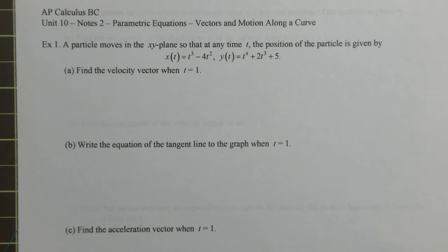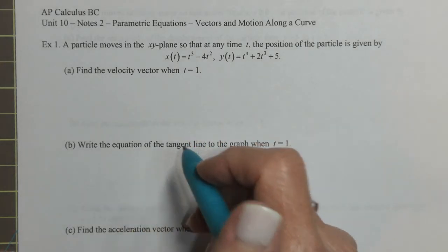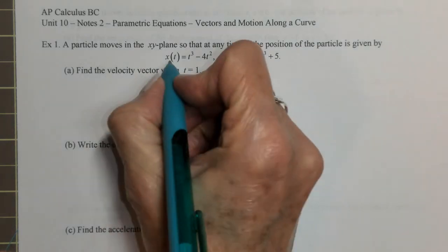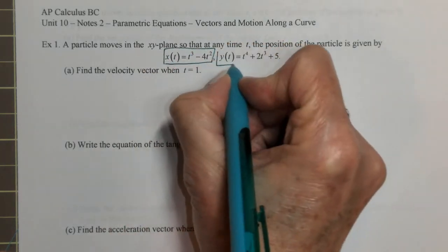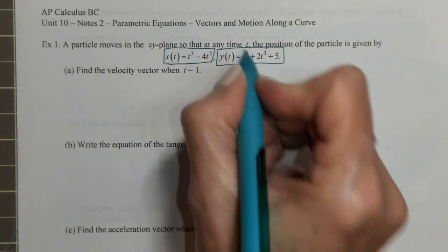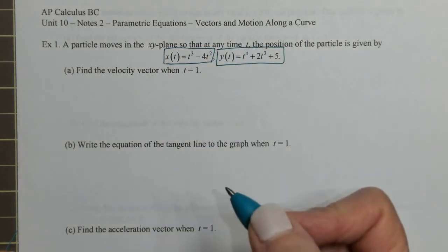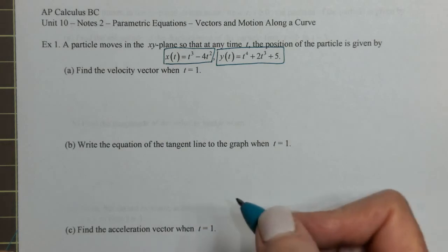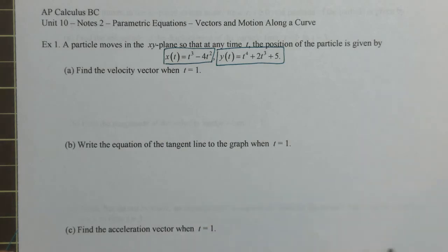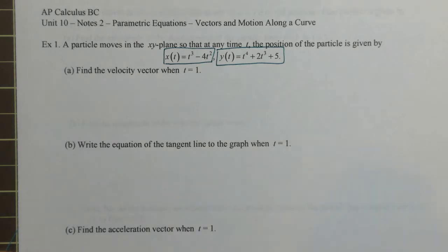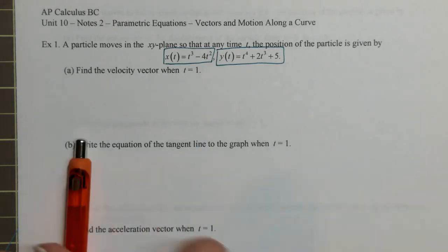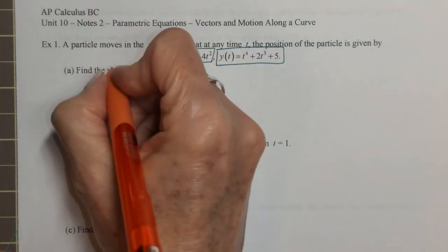So example one: a particle moves in the xy plane so that at any time t the position is given by x of t and y of t. We know that at any time t we can plug in that time and get the exact location of this particle wherever it is on this curve. Part a: find the velocity vector at time one.